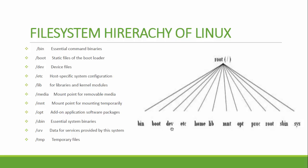Slash dev is for devices. Slash etc is for host-specific configuration files — for example, when you install a web server or FTP server, the configuration files will be in slash etc. User information is also stored in slash etc. Slash home is the directory for other users' home directories.